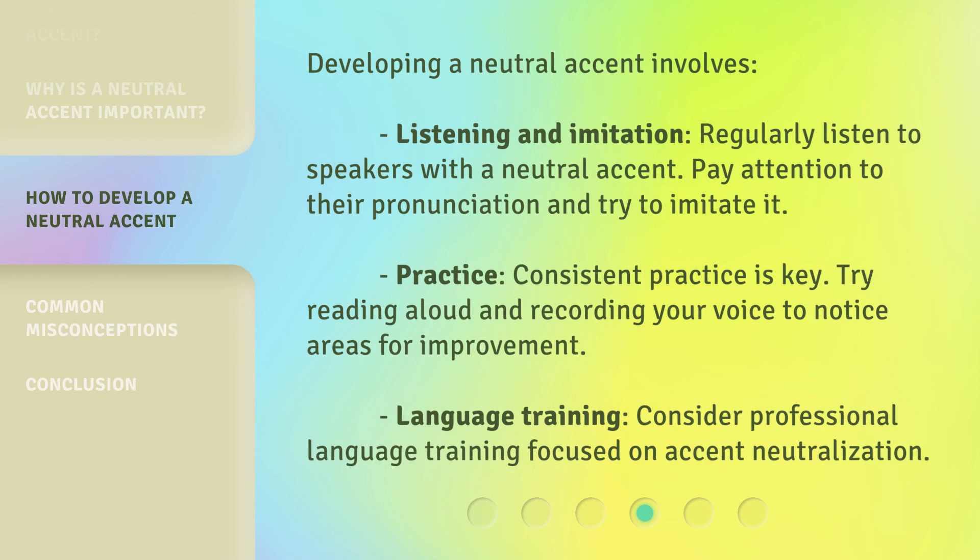Developing a neutral accent involves listening and imitation. Regularly listen to speakers with a neutral accent, and pay attention to their pronunciation and try to imitate it. Consistent practice is key — try reading aloud and recording your voice to notice areas for improvement. You might also consider professional language training focused on accent neutralization.